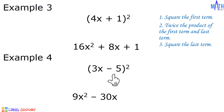Step number three: square the last term. Negative 5 times negative 5 is equal to positive 25. And the square of 3x minus 5 is equal to 9x squared minus 30x plus 25.